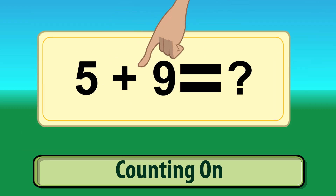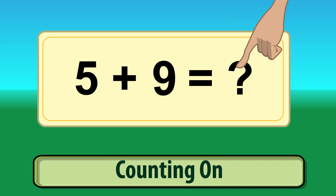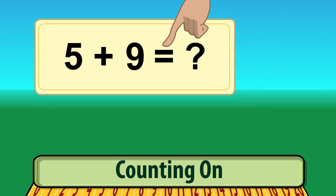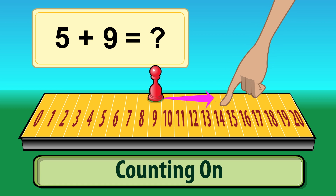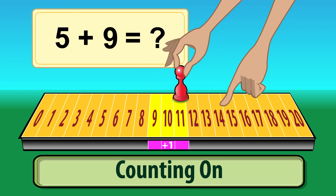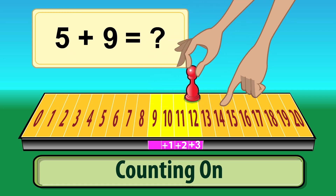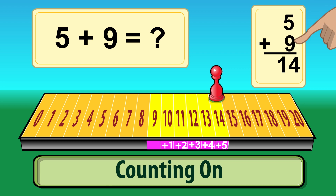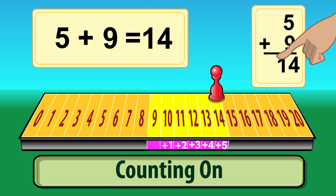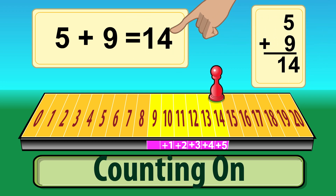What is 5 plus 9? Start with the larger number, 9. Move 5 places to the right. 9, 10, 11, 12, 13, 14. It's an easy way to add: counting on. 5 plus 9 equals 14. Counting on.